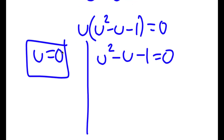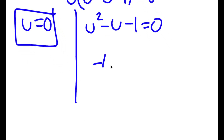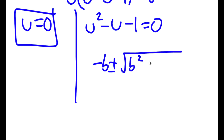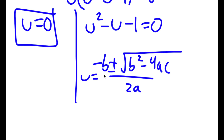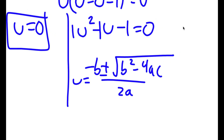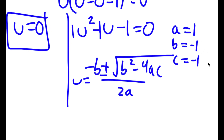We already have one solution of u. To solve the quadratic, I'm going to use the quadratic formula: negative b plus or minus the square root of b squared minus 4ac all over 2a. In this case, a is 1, b is negative 1, and c is negative 1.